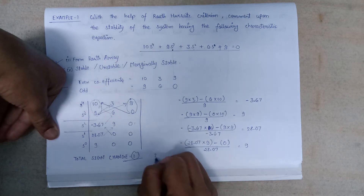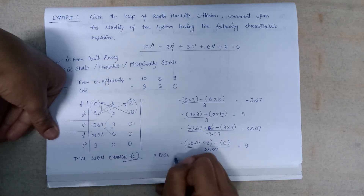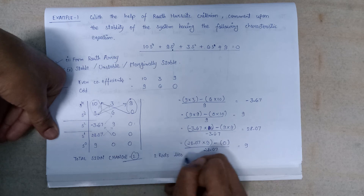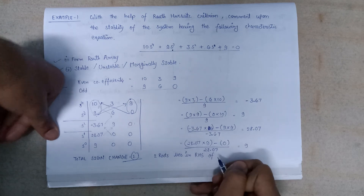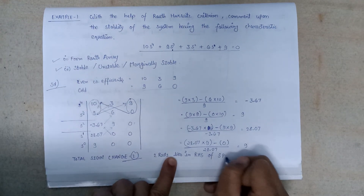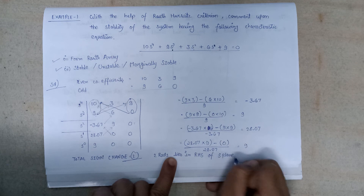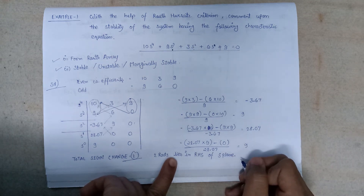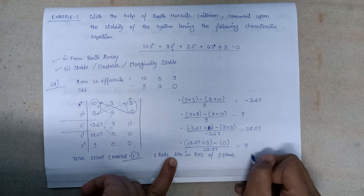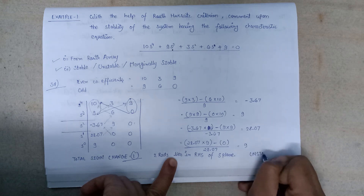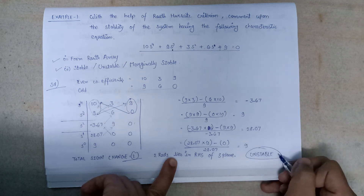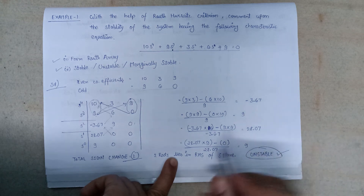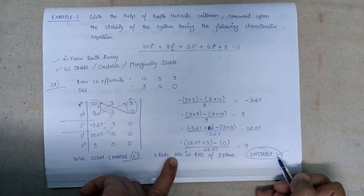28.07 and 9 are both positive so no sign change there. The total number of sign changes is 2, which means there are 2 roots in the right-half plane. This shows that our system is unstable. So the overall result is that the system is unstable.